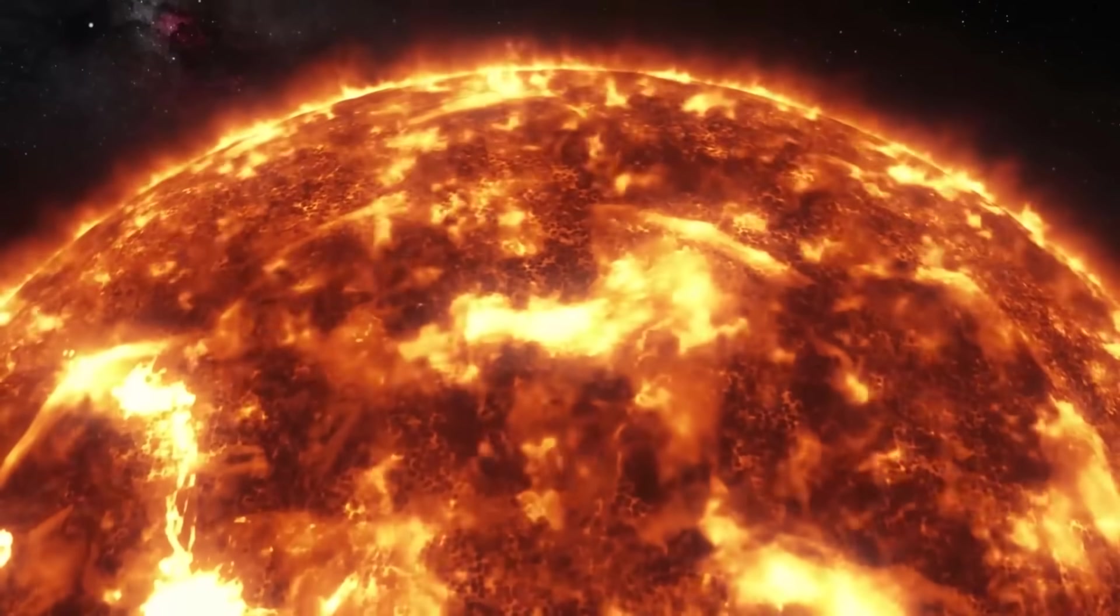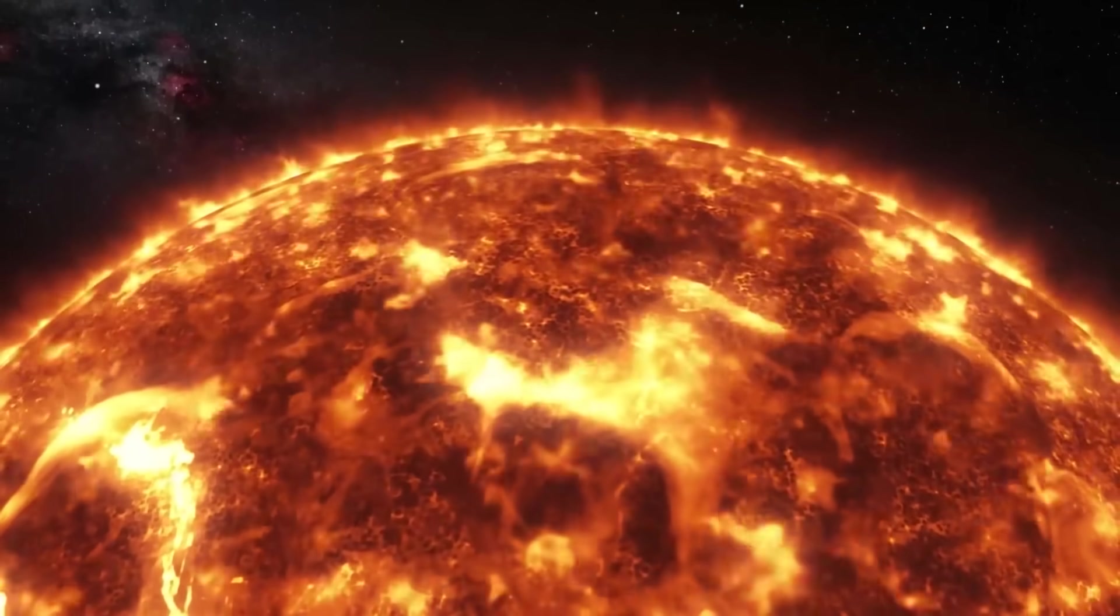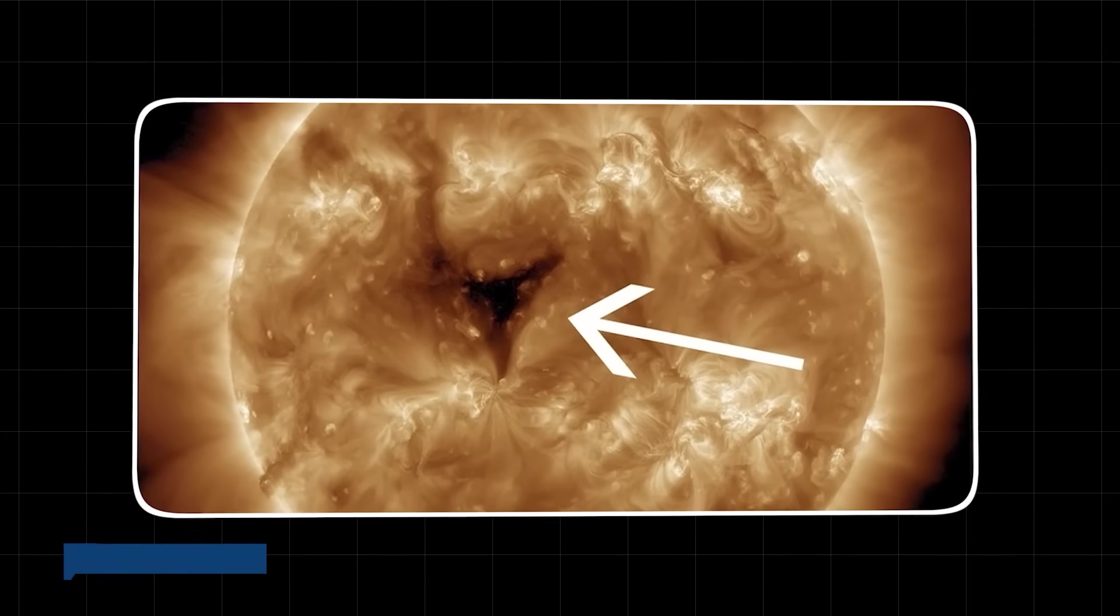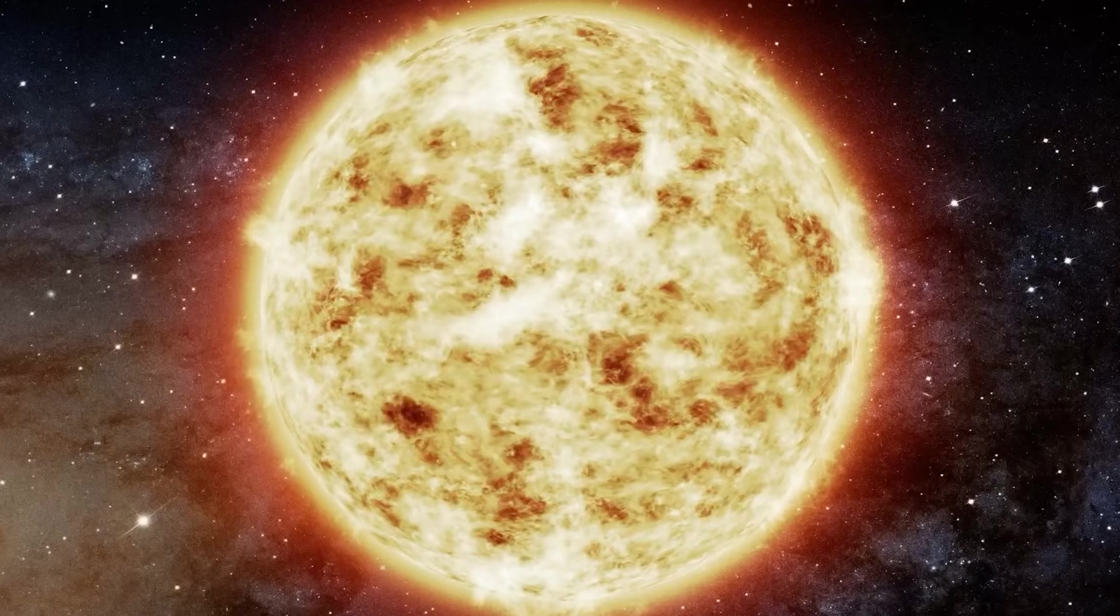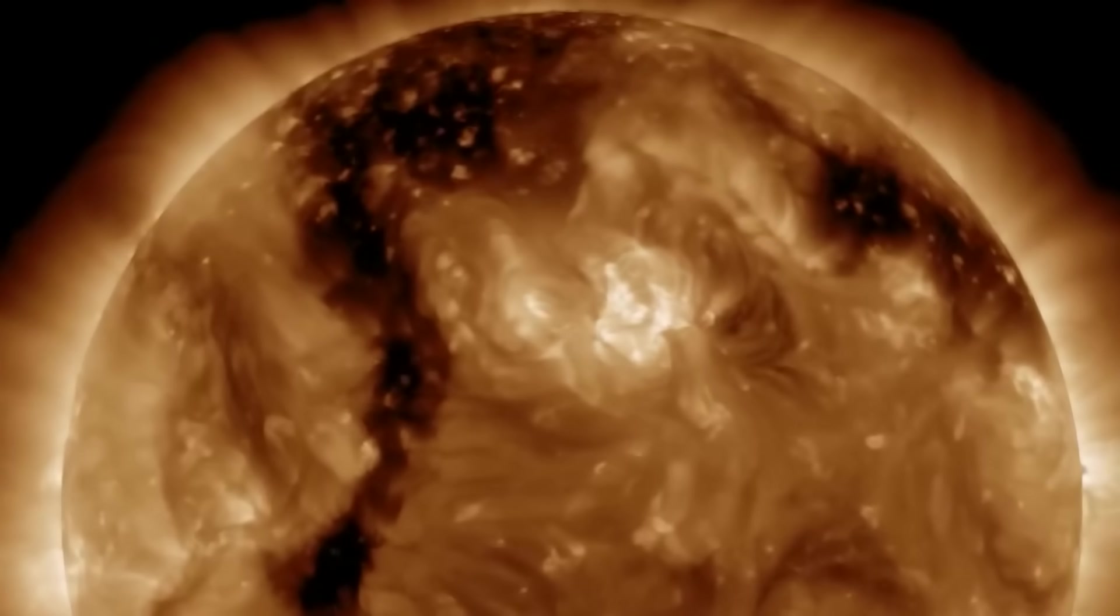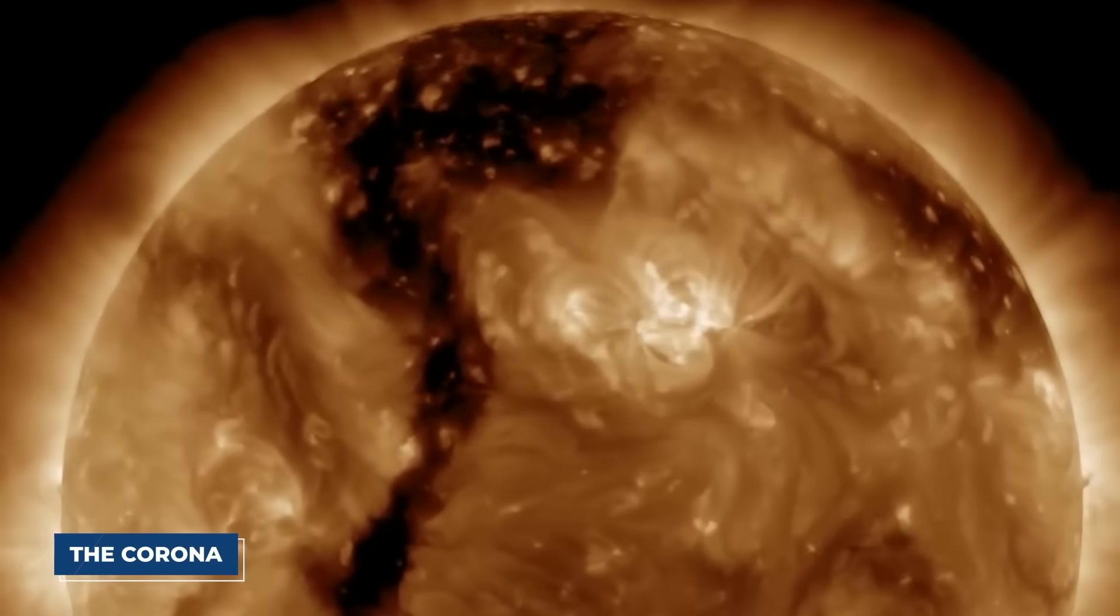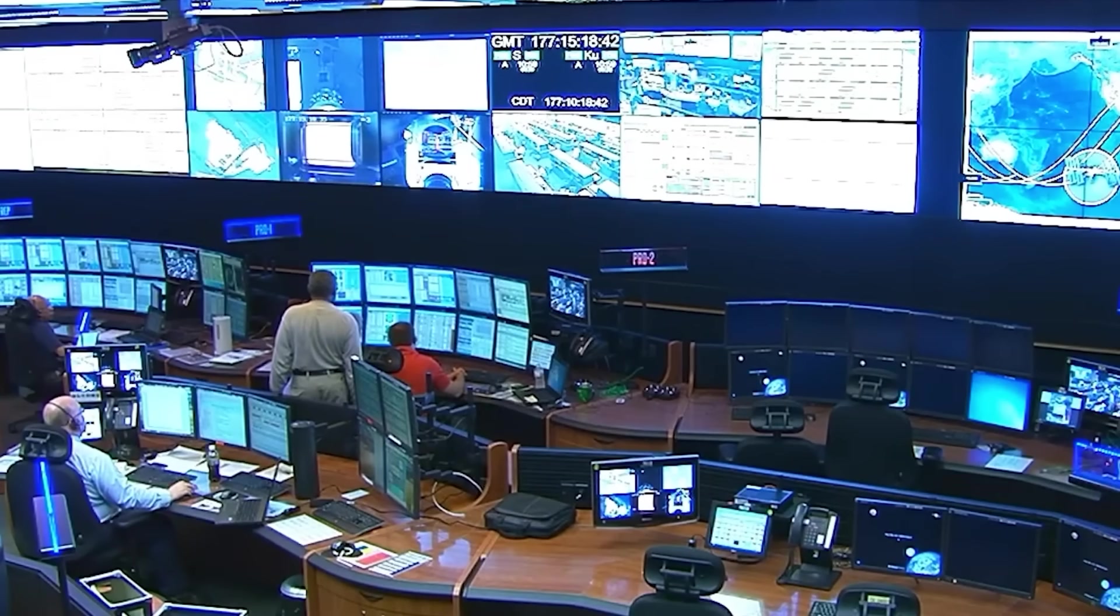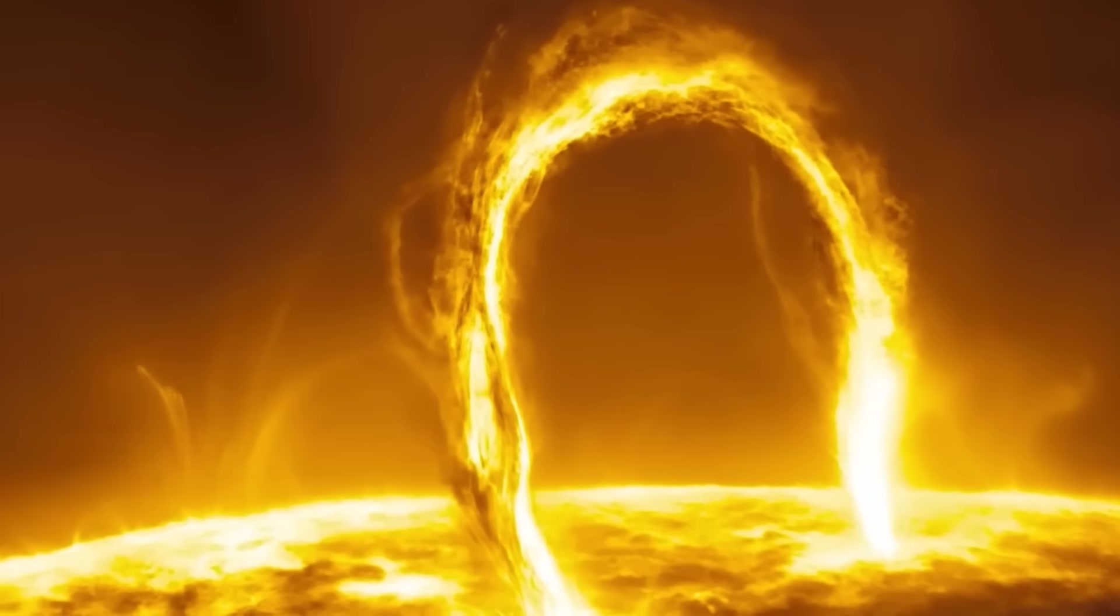There's no solid surface to punch a physical hole through. What we're actually observing is a phenomenon known as a coronal hole, but with a twist that sets this event apart. Coronal holes are regions in the Sun's outermost atmosphere, the corona, where the plasma is cooler and less dense. They appear darker in ultraviolet and X-ray images because they emit less radiation.